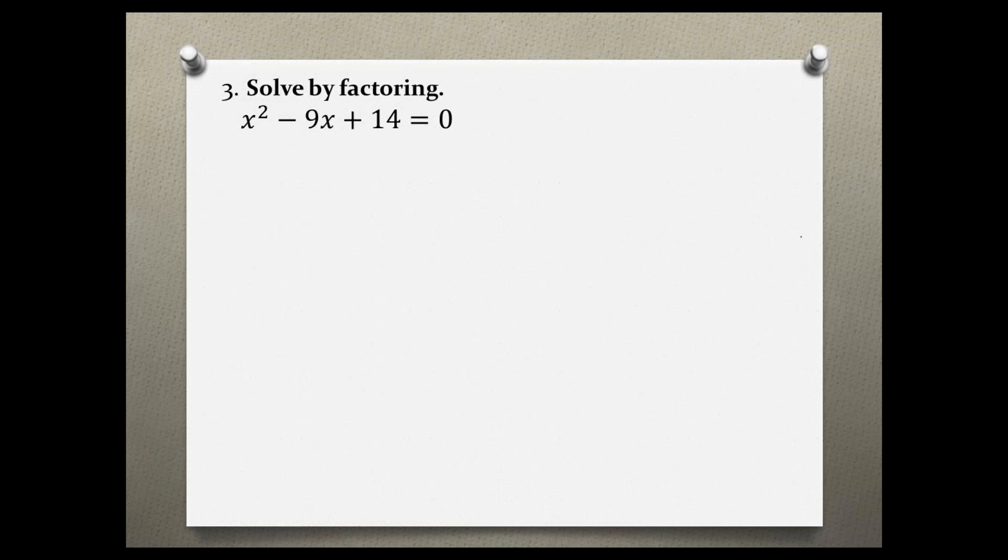Problem number three: solve by factoring. First we're going to look at the left side, and this is a trinomial. Using a factoring method, I choose to use what I call the Columbia method because we have a coefficient of 1 and this is a trinomial.